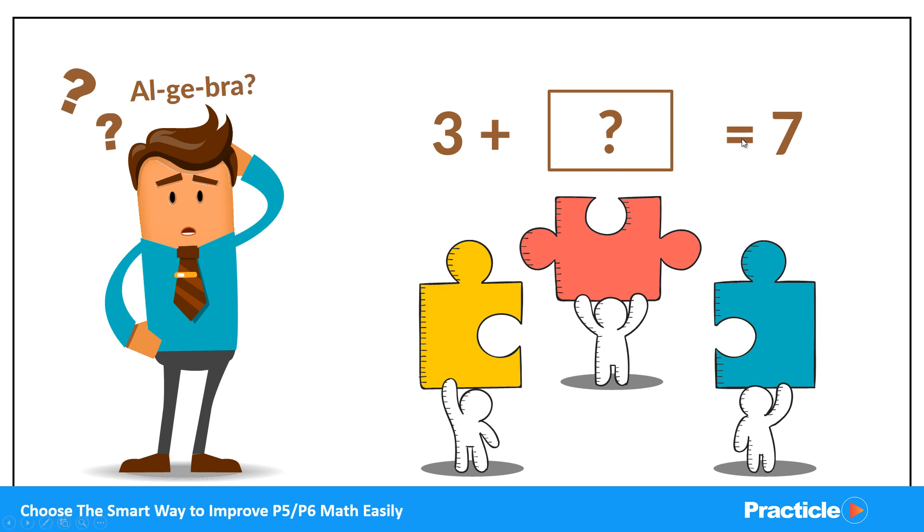3 plus question mark equals 7. Instead of putting a question mark in a box, in algebra we use a letter to represent the unknown. And this letter can be any letter from A to Z. If you are curious about the most popular letters, they are definitely X and Y.